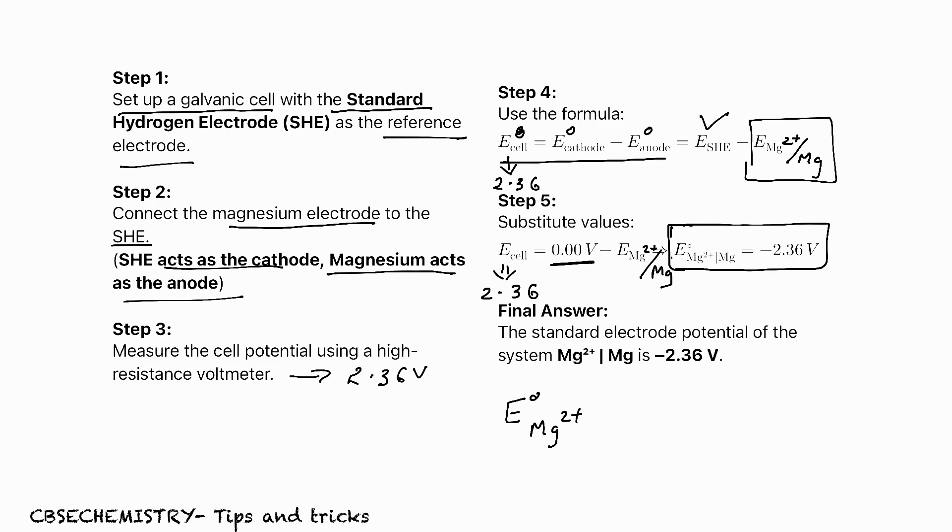E°Mg²⁺/Mg - that is the standard electrode potential or standard reduction potential of Mg - is minus 2.36 volt. This is what we were supposed to find. If anybody has any doubt, watch this video again and you will get a good idea.